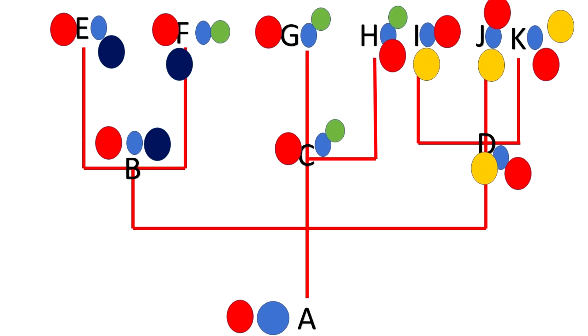In addition, the ERV data also matches evolutionary trees predicted by the location of pseudogenes and other DNA sequencing techniques, and is consistent with fossil records. As predicted by evolution, humans share ERV sequences with chimpanzees — we actually share seven, all in those exact one-in-50-million-chance specific locations in our genome. The probability of that happening by chance is astronomically unlikely.